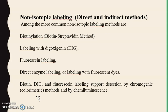Isotope labeling has major drawbacks — it is hazardous to health and its short half-life causes rapid degradation. Therefore, certain non-isotopic methods are used to label probes: biotinylation, labeling with digoxigenin, fluorescence labeling, direct enzyme labeling, and labeling with fluorescent dyes. Biotin, digoxigenin, and fluorescent labeling support detection by chromogenic methods and chemiluminescence.